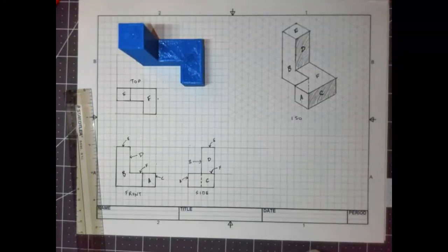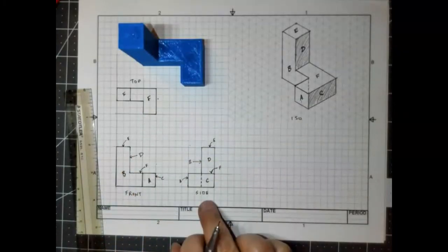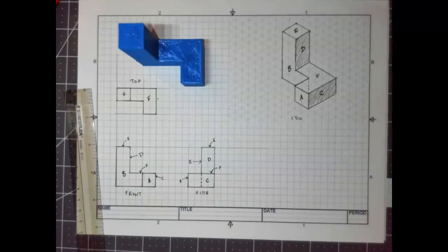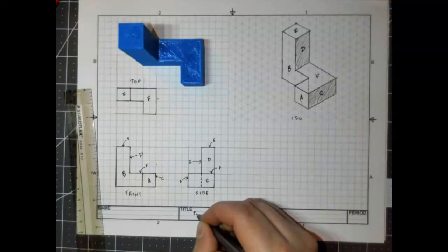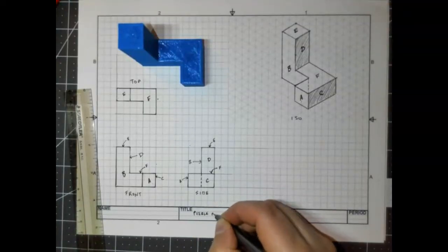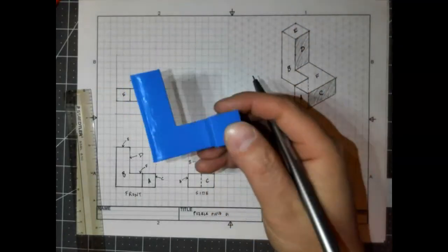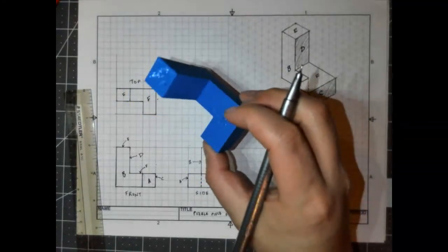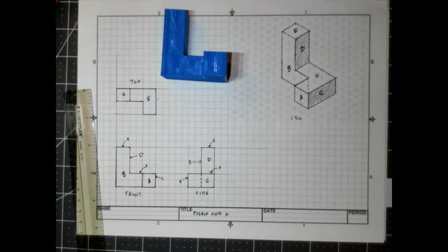So, I want you to draw your isometric. Draw your top front side. Label all of the surfaces like you see in this example. The title is Puzzle Piece A. And I have a bunch of these 3D printed. If that's helpful for you, come see me and grab one. And create your multi-view drawing of Puzzle Piece A.